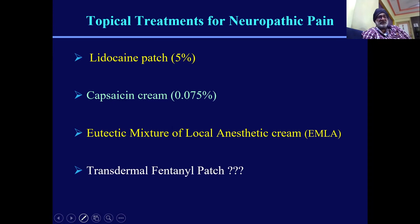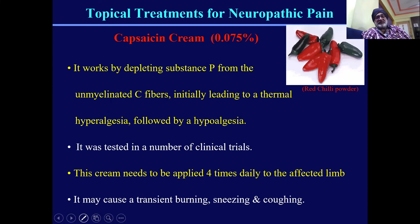Topical treatment plays a vital role in peripheral post-herpetic neuralgia. The drugs include lidocaine patch 5%, capsaicin cream, EMLA, or transdermal fentanyl. Capsaicin cream at 0.075% — essentially red chili extract — works by depleting substance P, which is responsible for pain conduction via unmyelinated C-fibers. It has to be applied four times daily to the affected limb only, acting locally. It may cause an initial transient burning sensation, but the patient gets used to it and it works very well.